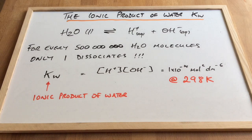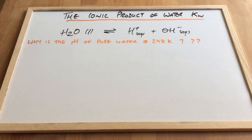So we'll just use KW to prove some things we take for granted about pure water. And so the most obvious thing is, why is the pH of pure water at 298 Kelvin 7?